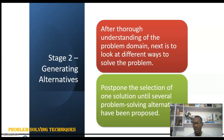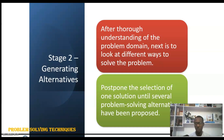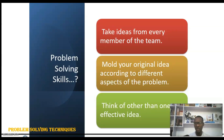What you are doing at this stage is bringing out every possible way to solve the problem. One important thing: do not jump to selecting one method at this stage. You have to postpone any selection of one method until all alternatives have been proposed. Also, you must involve your team members and take ideas from everyone to achieve that purpose, gathering several ways to approach the problem.